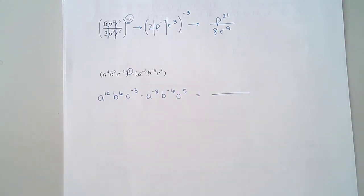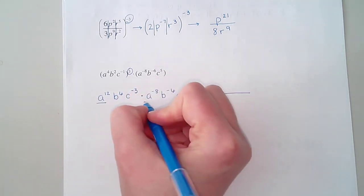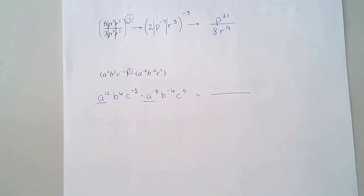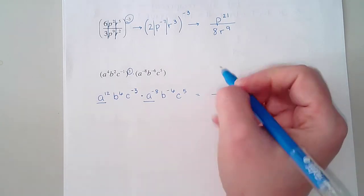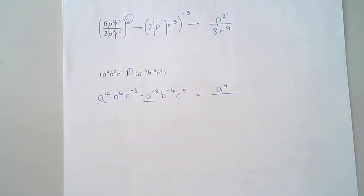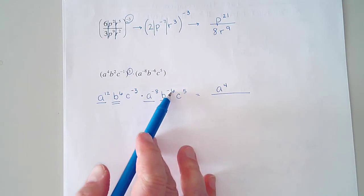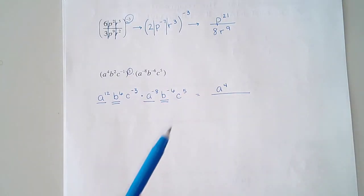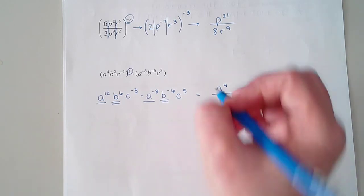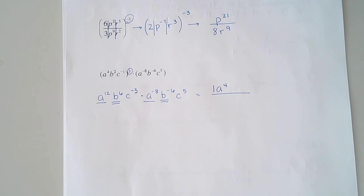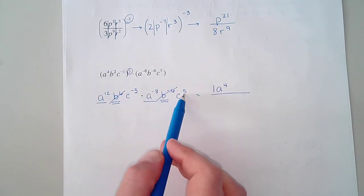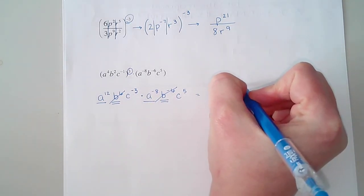Set up my fraction bar because I know this will be my last step. A to the 12th times a to the negative 8th. I'm multiplying, which means I'm adding my exponents. 12 plus negative 8 is going to give me positive 4. Because it's positive, the a is going upstairs. b to the 6th times b to the negative 6. Well, 6 plus negative 6 makes 0, which really means that b just creates a 1. You could put a 1 there to represent that b to the 0 power, but essentially those two things cancel each other out. And then negative 3 plus 5 would give me positive 2, so that c is also going on the top.